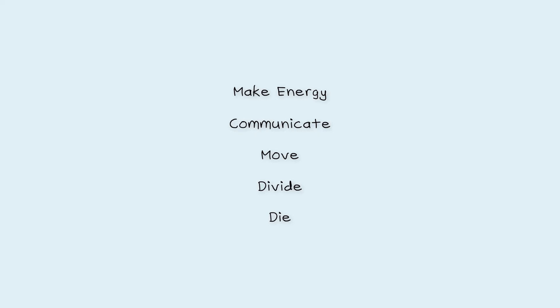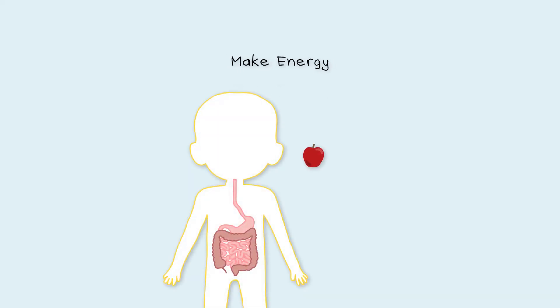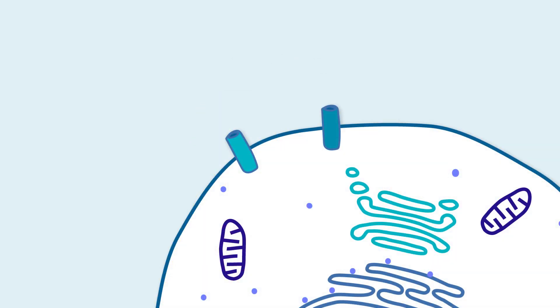To make energy, the food we eat is broken down in our stomach and intestines. And the sugars, proteins and fats from these are absorbed into our blood and delivered to our cells. A type of sugar called glucose can be taken up by cells and turned into energy in the cytoplasm.